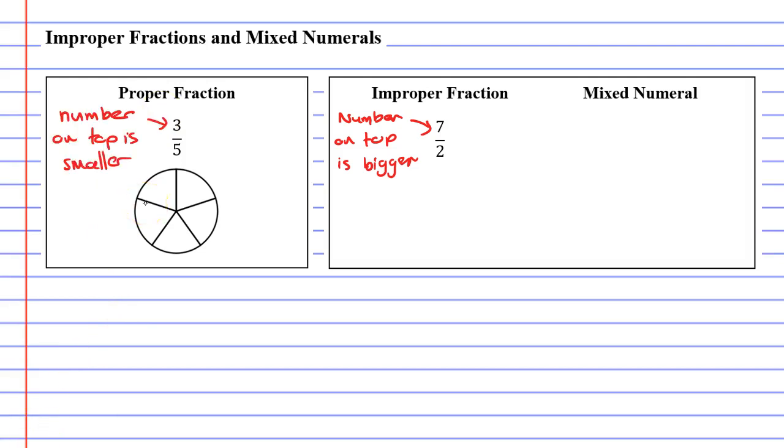Now to draw a proper fraction is quite easy. We just look at the denominator which is 5 and cut our circle into five pieces. We then look at our numerator 3 and that is how many pieces we color in.